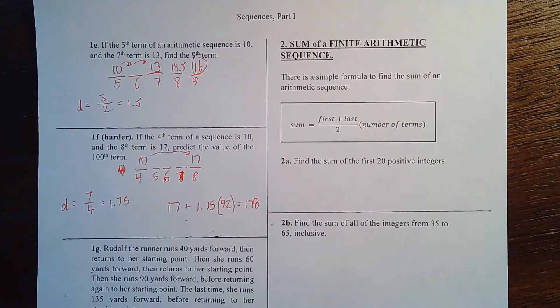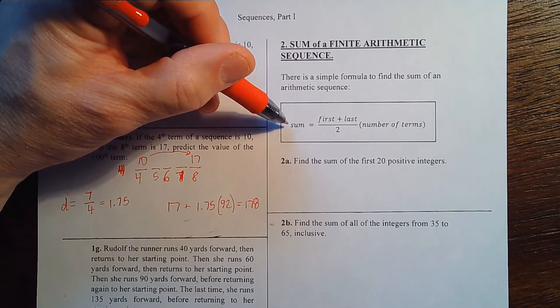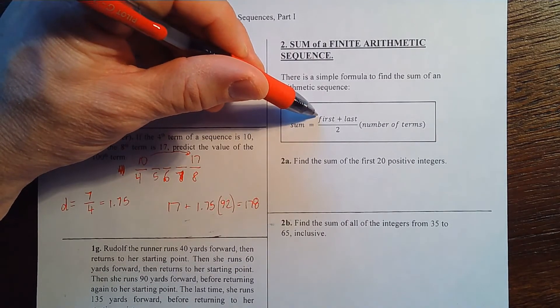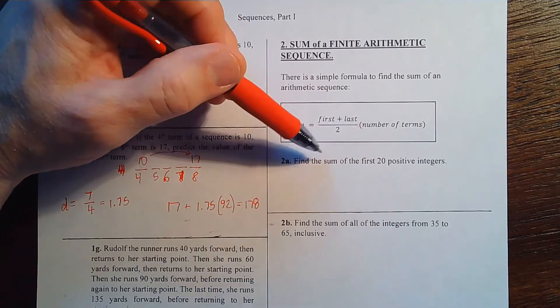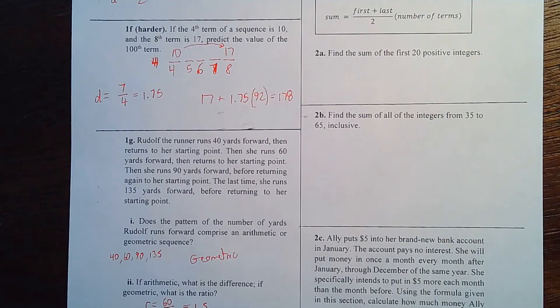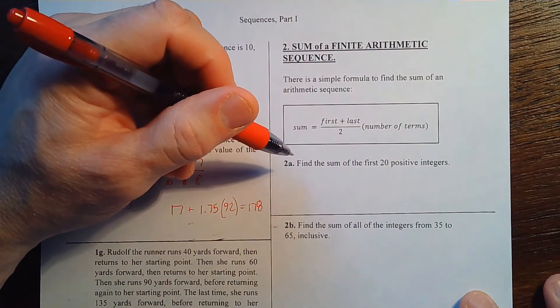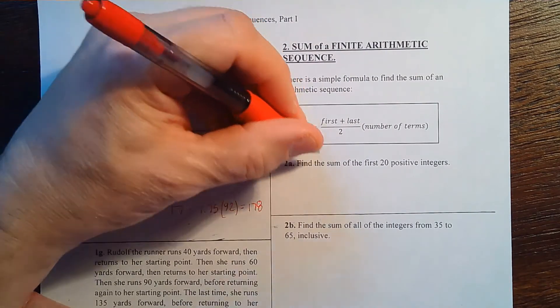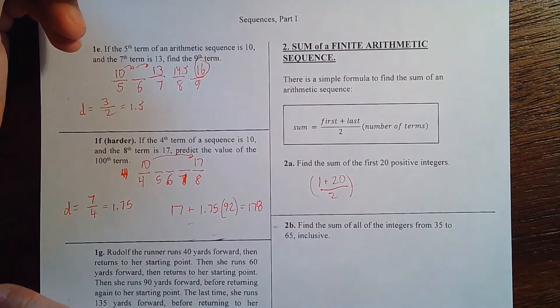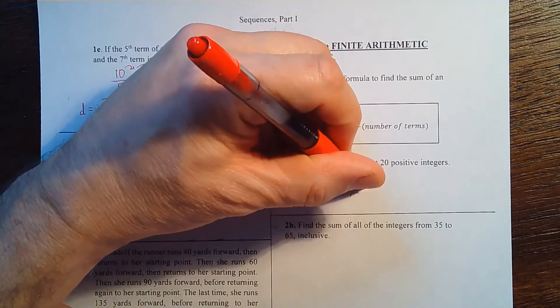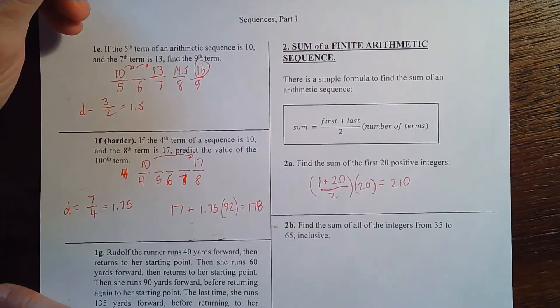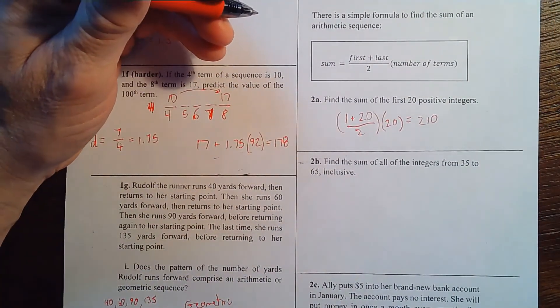Now part two: the sum of a finite arithmetic sequence. It's a fixed list of numbers that form an arithmetic sequence, and you want to find the sum. The formula: add the first and last numbers, divide by two, and multiply by the number of terms. Let's do 2a, 2b, and 2c. For 2a — find the sum of the first 20 positive integers: the first is 1, the last is 20, divided by 2, times 20 terms. That gives us 210.